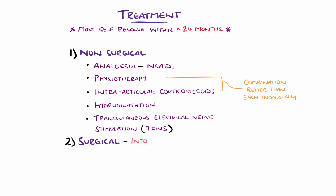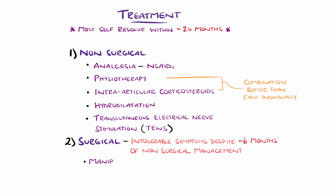Surgical approaches are generally considered in those who have not improved after a minimum of 3 to 6 months of non-surgical treatment and cannot tolerate symptoms. Manipulation is one option, where the humerus is manipulated to break adhesions, with arthroscopic capsule release being another option.